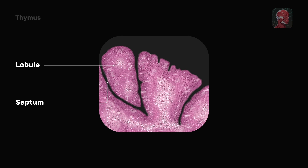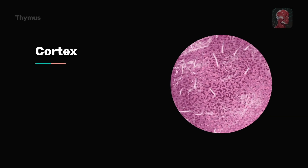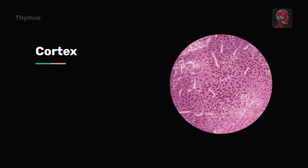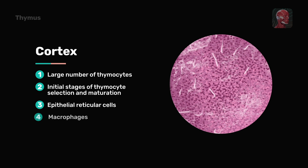Histologically, each lobule has a peripheral dark zone known as the cortex and a central lighter zone called the medulla. The cortex contains numerous T-lymphocyte precursors known as thymocytes, which have migrated from the bone marrow. The cortex is where the initial stages of thymocyte development take place. It also houses epithelial reticular cells and macrophages.